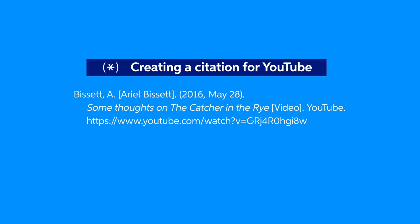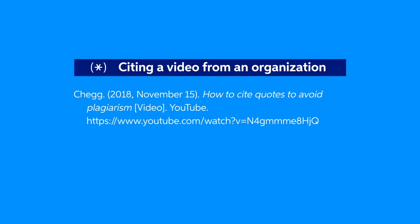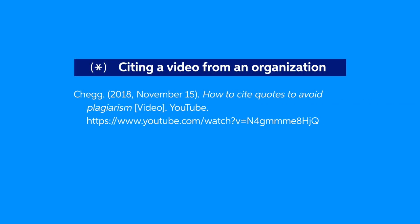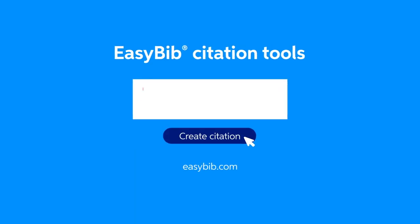Next, put the title in italics, followed by "video" in brackets. Finally, write YouTube and the URL. If you're citing a video by an organization, the username becomes the author — all other details stay in the same place. And that's it. Not too hard, right? If you need any more help with citations, be sure to check out easybib.com and use EasyBib citation tools.